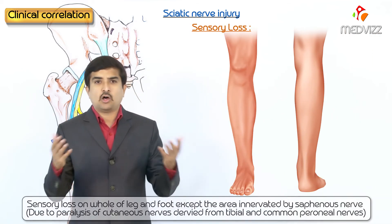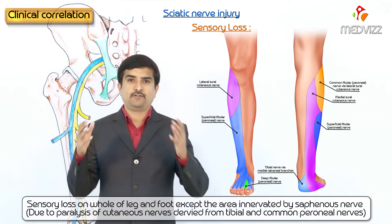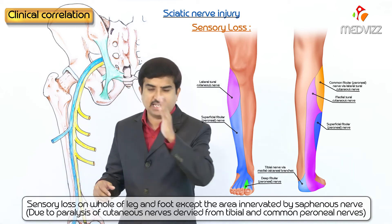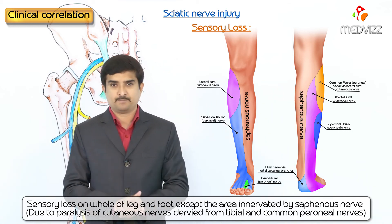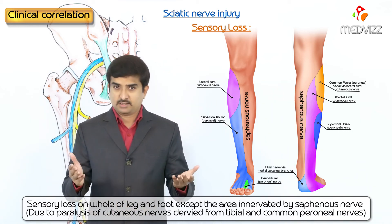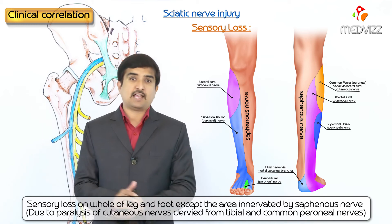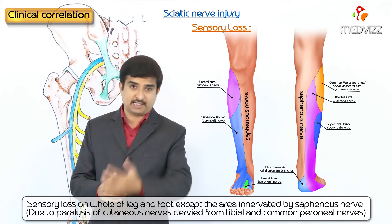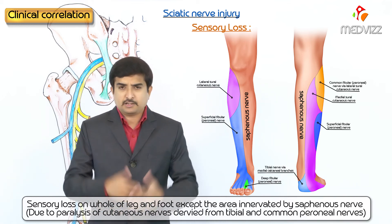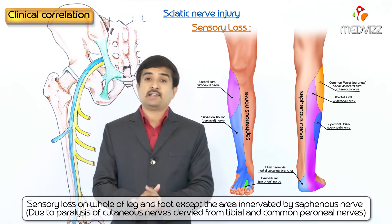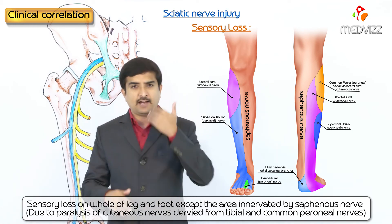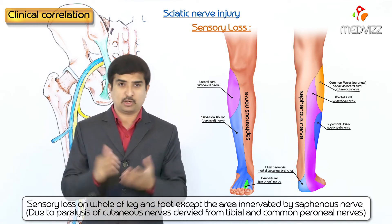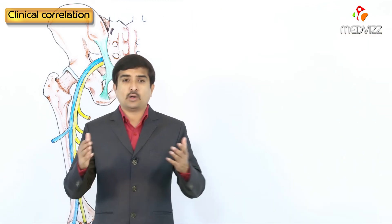Sensory loss is seen over the whole of the leg and foot, except the area innervated by the saphenous nerve, because the saphenous nerve is a component of the femoral nerve and not the sciatic nerve. This sensory loss is due to paralysis of the cutaneous nerves derived from the tibial and common peroneal nerves.